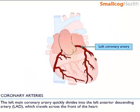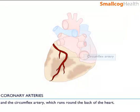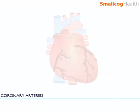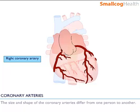The left main coronary artery quickly divides into the left anterior descending artery, LAD, which travels across the front of the heart, and the circumflex artery, which runs round the back of the heart. These, together with the right coronary artery, form the main heart arteries. The size and shape of the coronary arteries differ from one person to another.